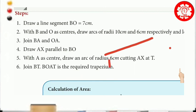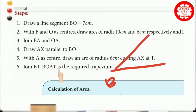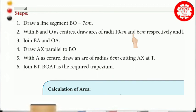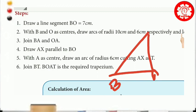Draw a 7cm line segment — that is step one. Then, with B as center draw arc of 10cm, and with O as center draw arc of 6cm. Let them cut at A. Join B-A and O-A. This gives us the triangle part. Then at vertex A, draw a parallel line to BO using the set square method. This joins at the dotted line.